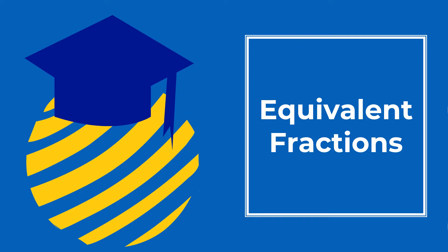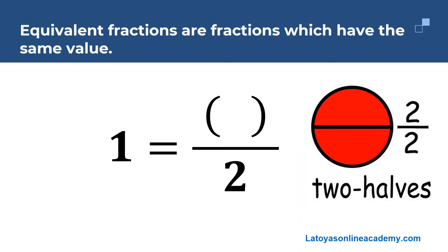Today we'll be looking at equivalent fractions. Equivalent fractions are fractions which have the same value. Here we have one whole is equal to something over two. One whole is equal to two over two. This is telling us that one whole has the same value as two over two.